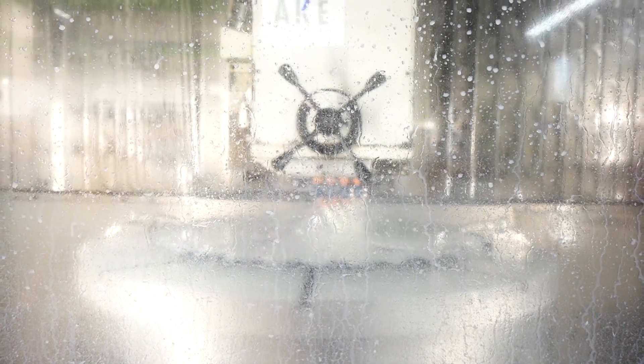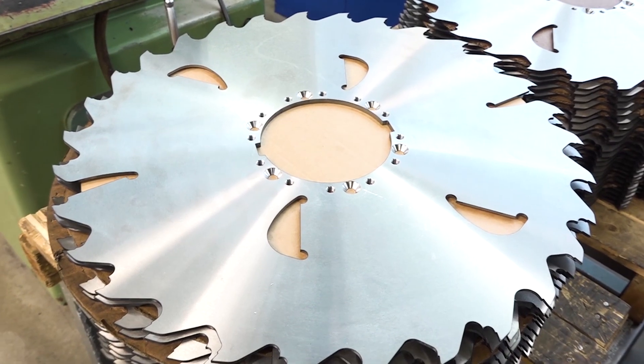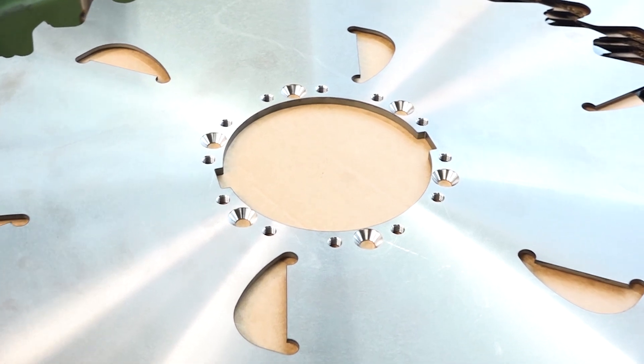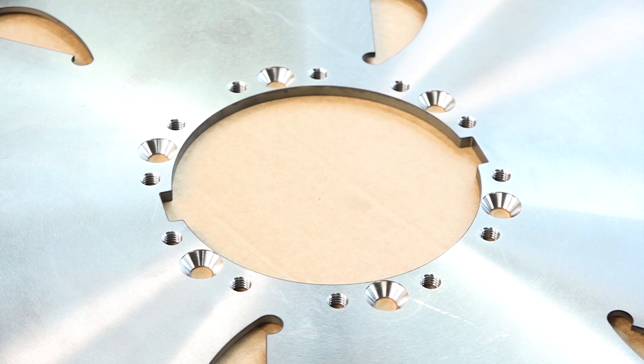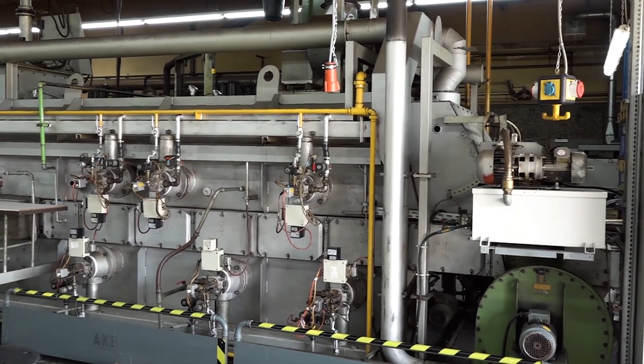So that the circular saw blade can later be mounted in the sawmill, it is provided with a special drilling pattern. Later, these elements ensure a smooth transmission of power from the machine to the tool.